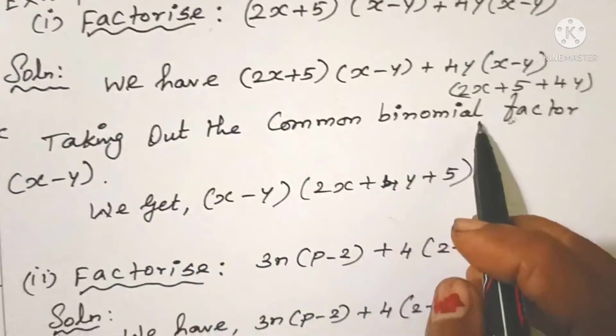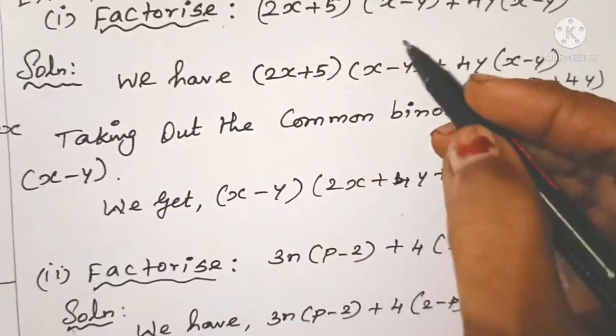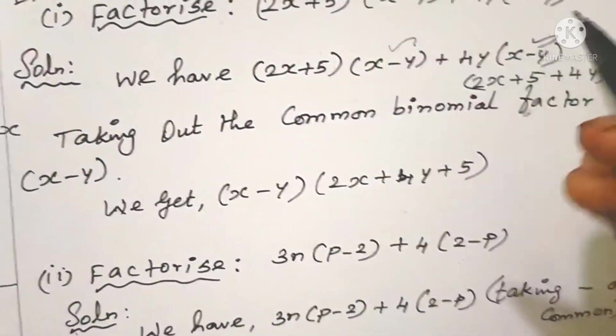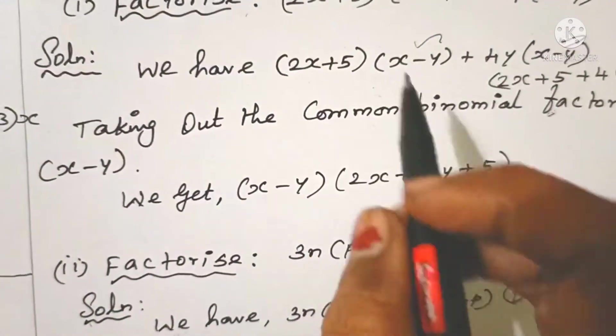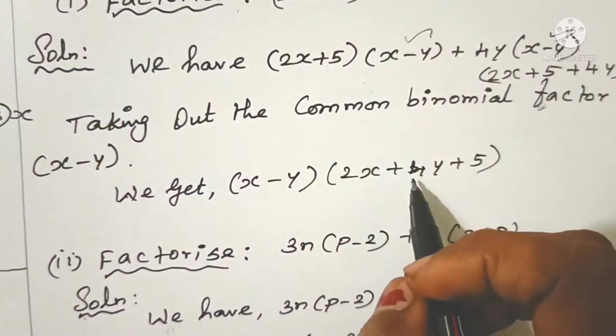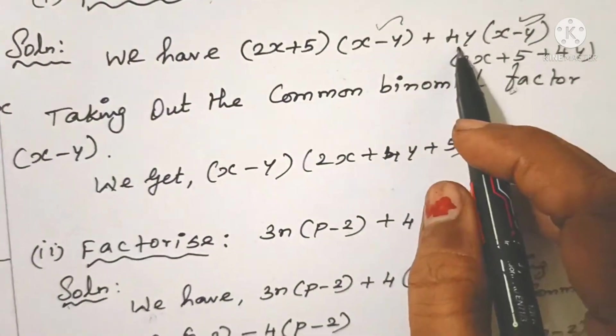Taking out the common binomial factor x minus y. So here is one x minus y and here is one x minus y common. So we get (x - y)(2x + 5 + 4y).